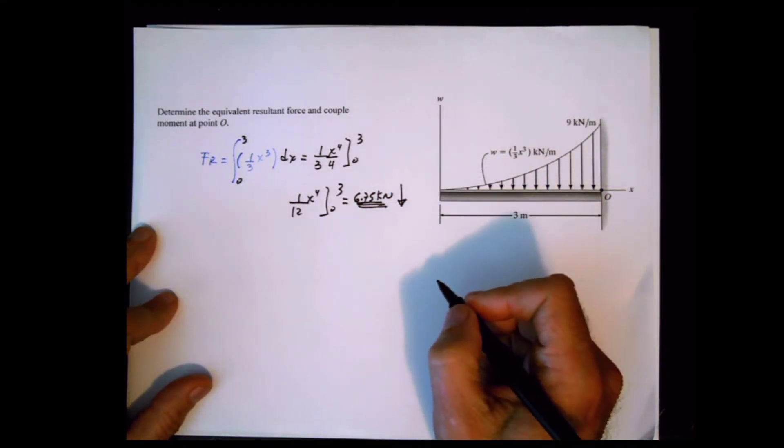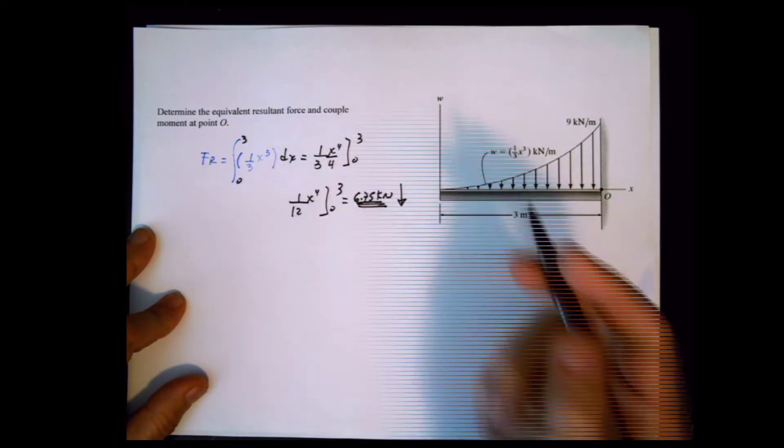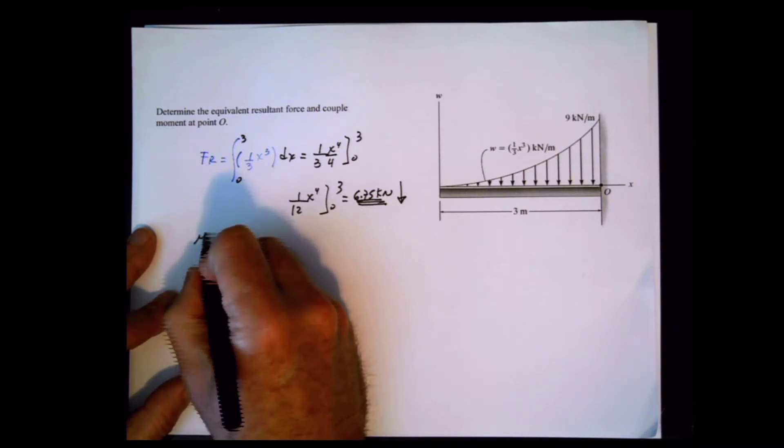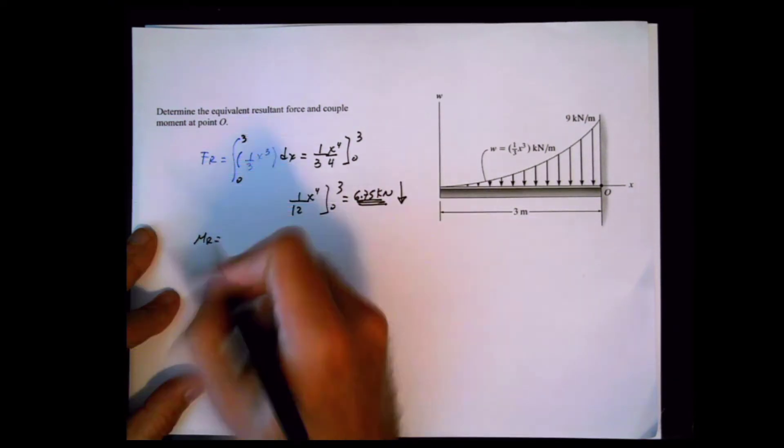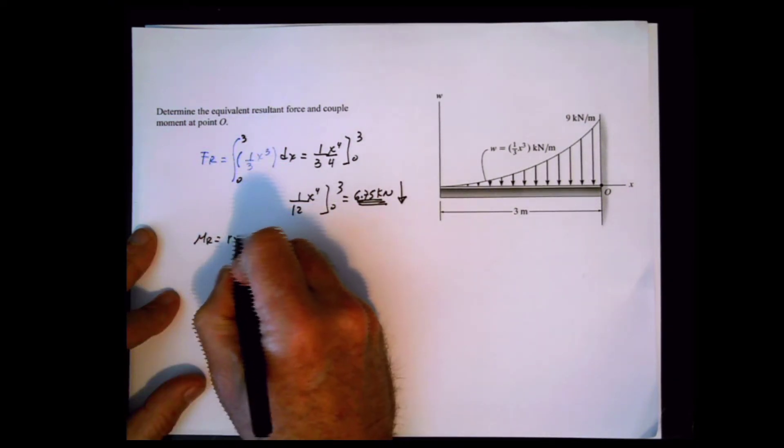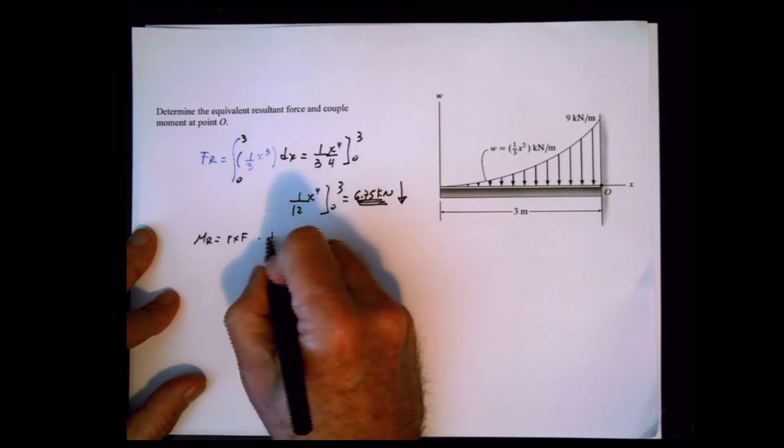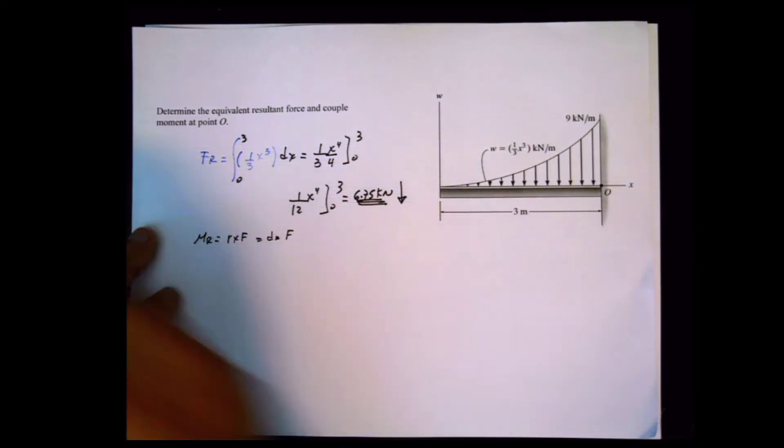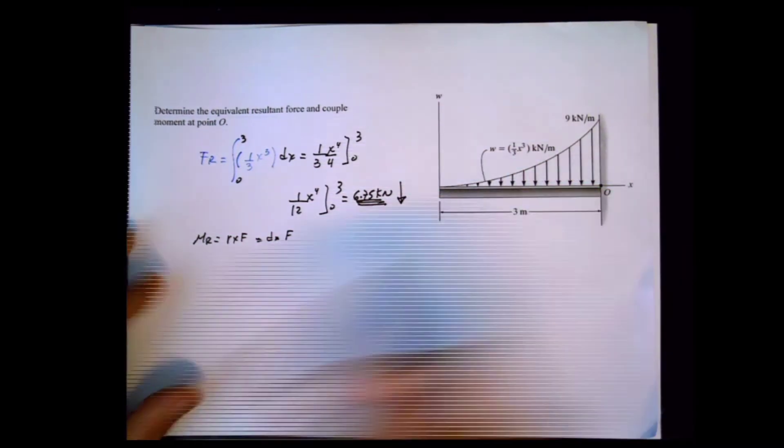The second part is the summation of moments. The resultant moment is the distance times the force, or r cross F. The only tricky part is finding that distance.